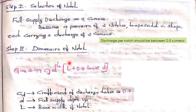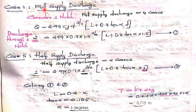Step 2 is finding out the dimensions of the notch. The equation is: Q = 2.99 × Cd × d^(3/2) × (L + 0.8 × tan(α) × d), derived by considering the trapezoid as a rectangle and triangle combined. Cd is the coefficient of discharge, taken as 0.7; d is the full supply depth on the upstream side; and L is the base width of the notch. Case 1 is the full supply discharge case — for one notch the discharge is 2 cumecs, with d = 1.5 meters, giving equation 1 with unknowns L and α.